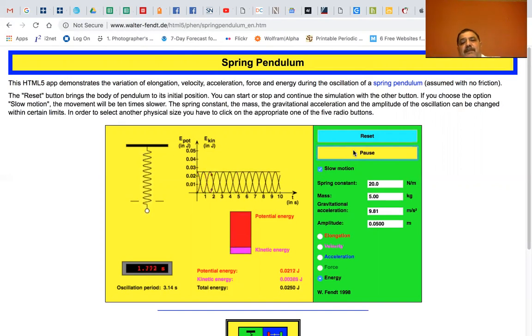Now it's all spring potential energy pulling it back upward, and as it goes through the zero crossing, it's all kinetic energy. Now it's converting into gravitational potential energy. It keeps this cycle going—fully gravitational as it goes down, converting to fully kinetic energy.